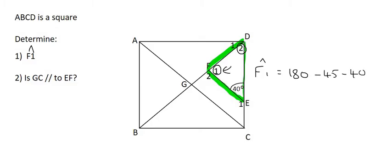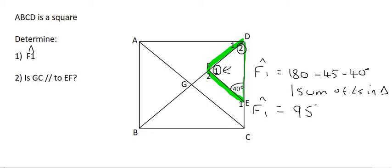The reason for that is because of the sum of angles in a triangle. If you work that out, you would end up with a value of 95 degrees.